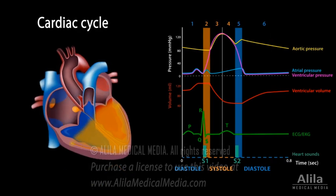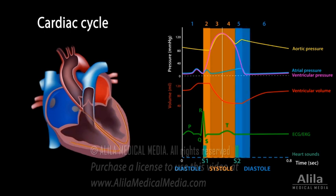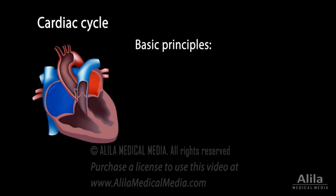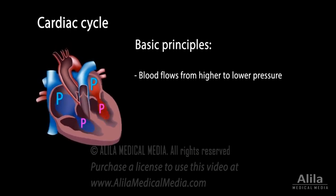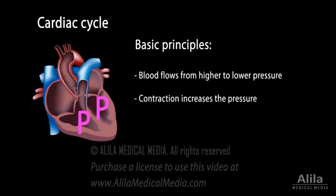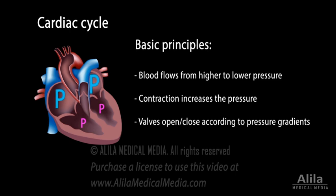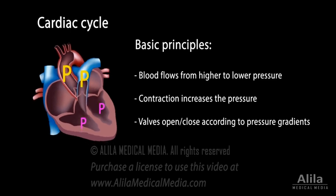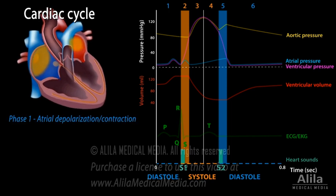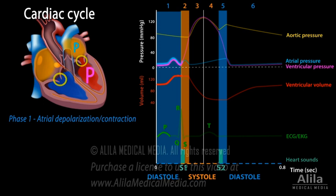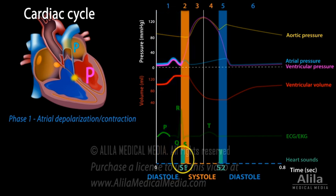A cardiac cycle has two major phases: systole, or ventricular contraction, and diastole, or ventricular relaxation, each with several smaller phases. Blood flows from higher to lower pressure. Contraction increases the pressure within a chamber, while relaxation lowers it. AV valves open when atrial pressures are higher than ventricular pressures and close when the pressure gradient is reversed. Semi-lunar valves operate similarly. The cycle is initiated with the firing of the SA node that stimulates the atria to depolarize. Phase 1 includes atrial depolarization and atrial contraction. The closing of AV valves produces the first heart sound, S1, and marks the beginning of systole.